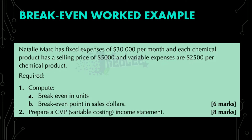So the selling price per unit is $5,000 and the variable cost per unit is $2,500. You are required to compute break-even in units, break-even point in sales dollars, and to prepare a CVP income statement. Let us look at part A of number one, and that is to calculate break-even in units.